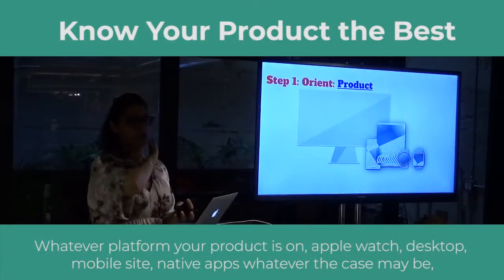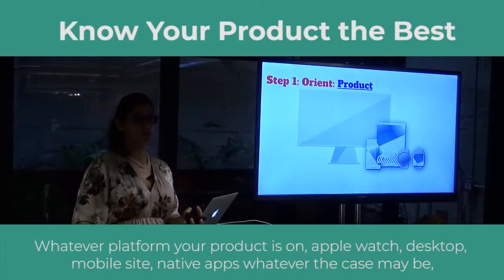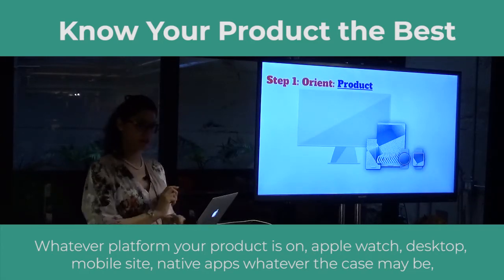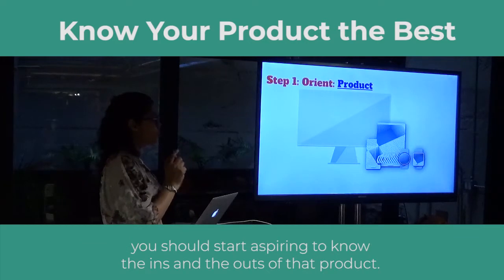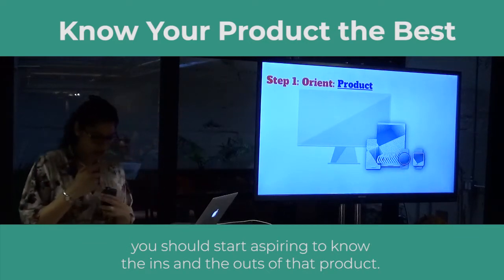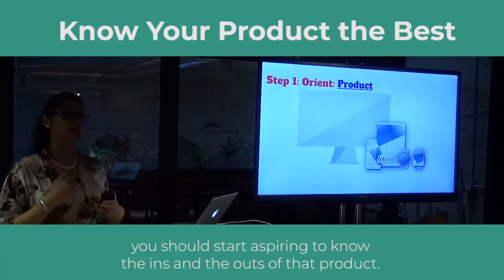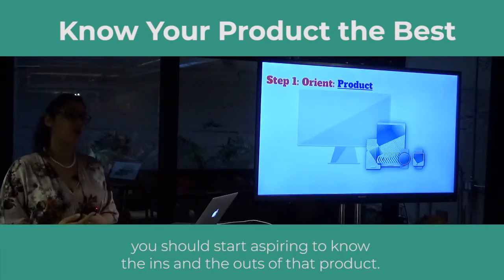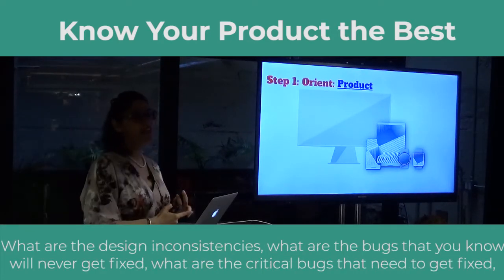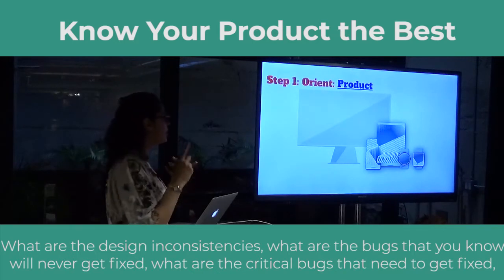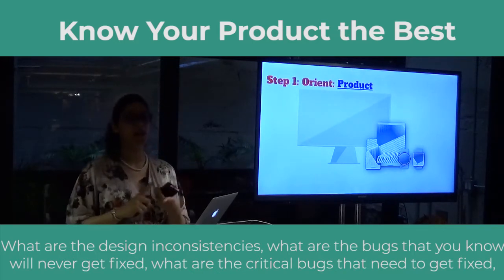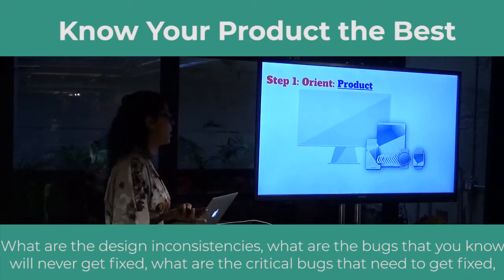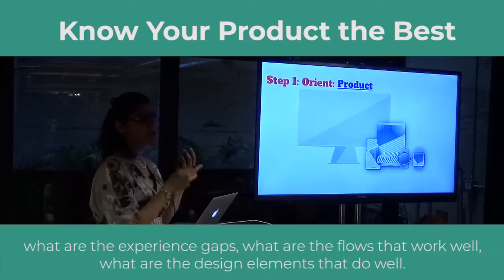Whatever platform your product is on — Apple Watch, desktop, mobile site, native apps, whatever the case may be — you should start aspiring to know the ins and outs of that product. What are the design inconsistencies? What are the bugs? What are the bugs that you know will never get fixed? What are the critical bugs that need to get fixed? Where are the experience gaps?